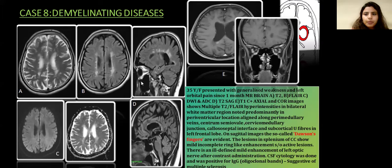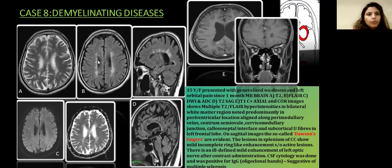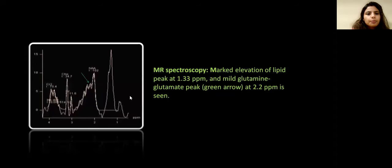Next case: 35-year-old female presented with generalized weakness and left orbital pain since one month. MR brain T2, FLAIR, diffusion-weighted, T2-SAGE, and contrast T1 axial and coronal images showing multiple T2 and FLAIR hyperintensities in bilateral white matter, predominantly periventricular, along perimedullary veins, calloseptal interface, subcortical U-fibers, and cervicomedullary junction, with no diffusion restriction and mild incomplete ring enhancement in the splenium of the corpus callosum, and ill-defined mild enhancement of the left optic nerve after contrast. CSF cytology was positive for IgG oligoclonal bands, suggestive of multiple sclerosis. MR spectroscopy showed marked elevation of lipid peak at 1.33 ppm and mild glutamine-glutamate peak at 2.2 ppm.